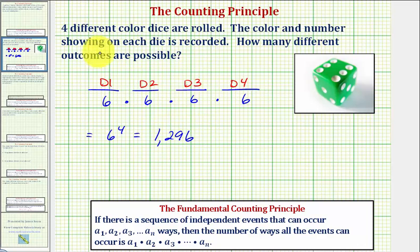Which means if four different colored dice are rolled, and the color and number are recorded, there are 1,296 possible outcomes.